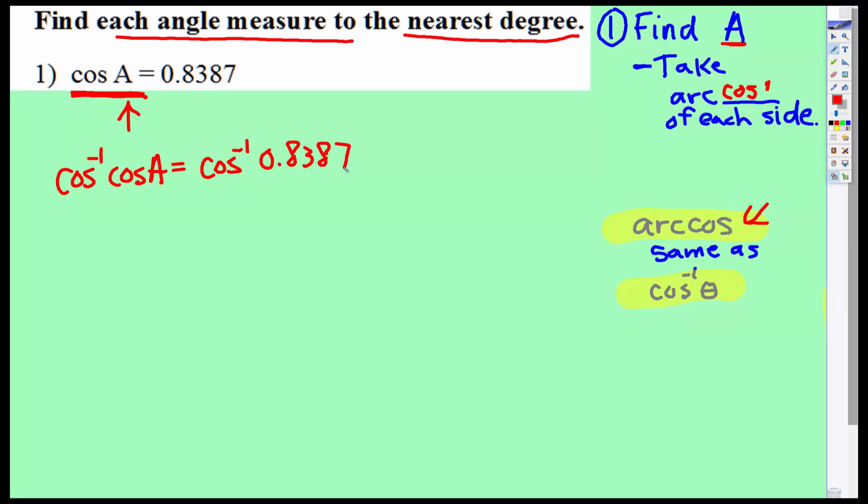Now, if you have a Texas TI-30 like we do in our classroom, you'll do it a little differently. Hit the second button, then hit the cosine button, then type 0.8387. It will give you 32.996 and a bunch of other numbers. So the angle degree measure is about 33 degrees.